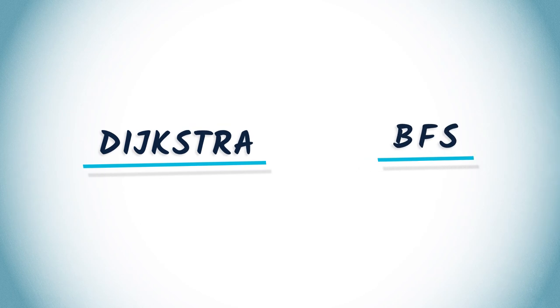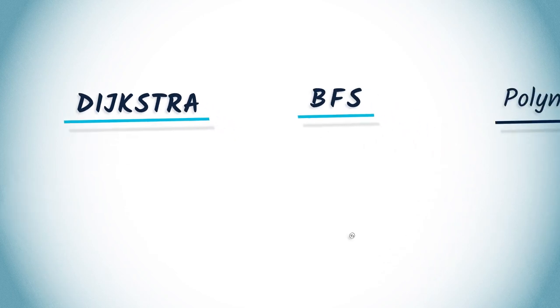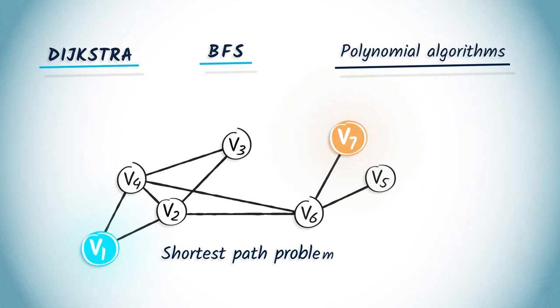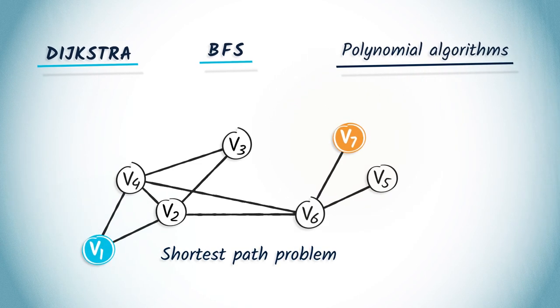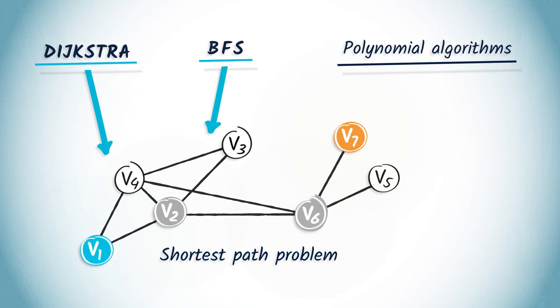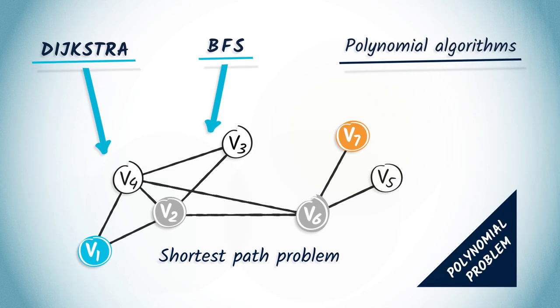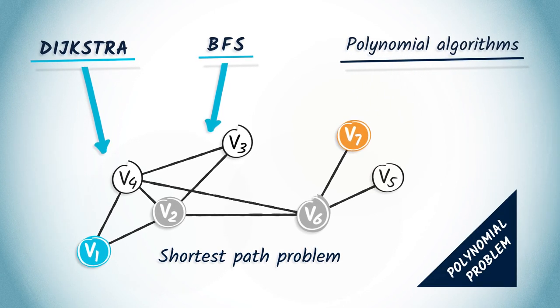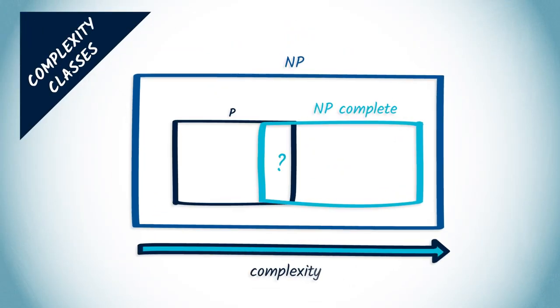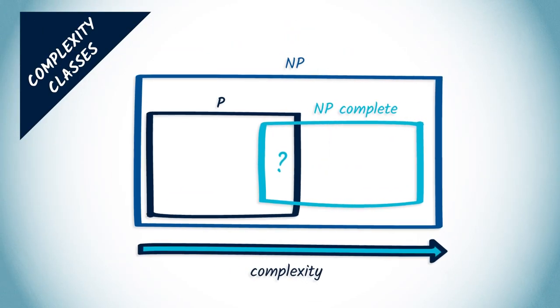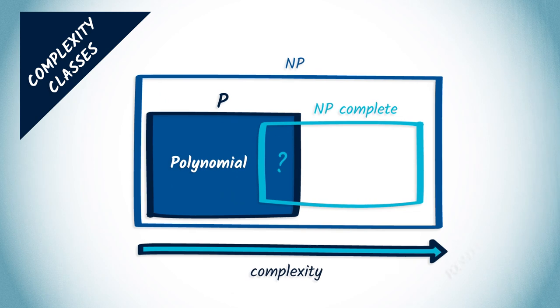We've already encountered a lot of polynomial algorithms in this course, such as the Dijkstra algorithm or the BFS. So if we consider, for example, the shortest path problem that these algorithms solve, they can be easily identified as being polynomial problems because a polynomial algorithm solves them. As a consequence, all these problems are in the complexity class called P, which stands for polynomial.